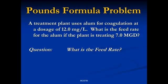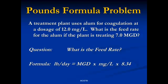The only formula that will get us to this point is the pounds formula. That is: the pounds per day of alum will be equal to the flow rate of the plant in MGD, times the chemical dosage in mg per liter, times our constant of 8.34.